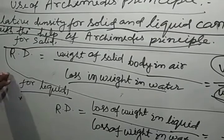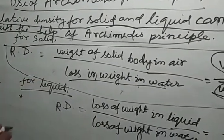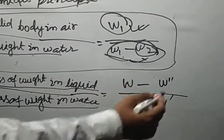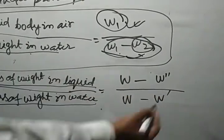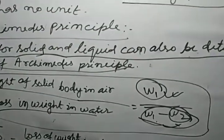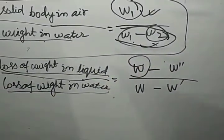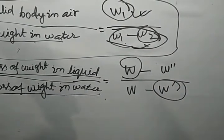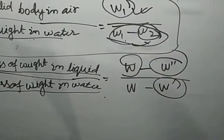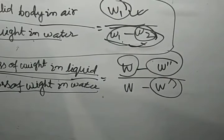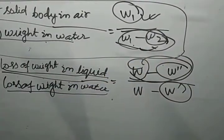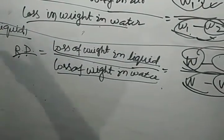The relative density for liquids using Archimedes' principle is: Relative density = loss of weight in liquid / loss of weight in water = (W − W″) / (W − W′), where W is the weight of the body in air, W′ is the weight when fully immersed in water, and W″ is the weight when fully immersed in the liquid.